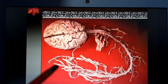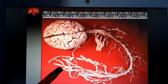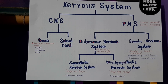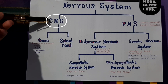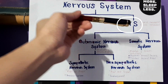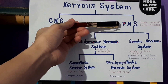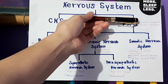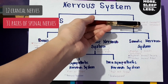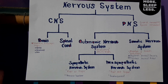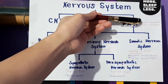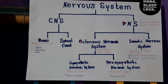Let us look at the major divisions of the nervous system. It always consists of two main divisions: the central nervous system (CNS) and the peripheral nervous system (PNS). The CNS consists of the brain and spinal cord. Structurally, the PNS consists of 12 cranial nerves and 31 pairs of spinal nerves.